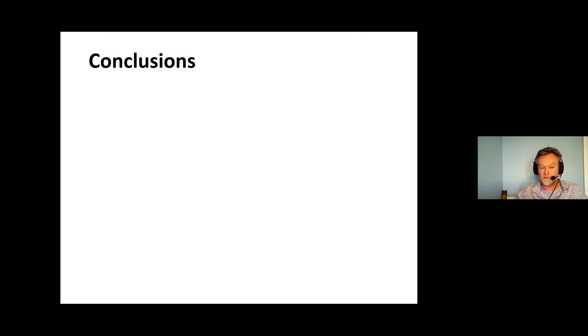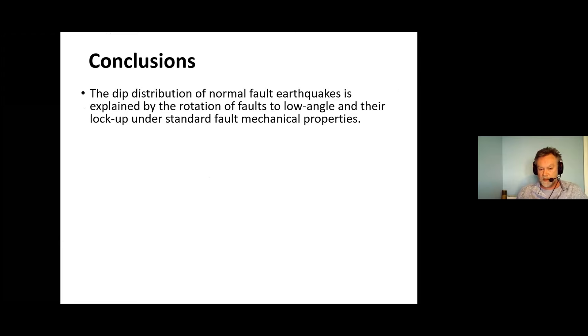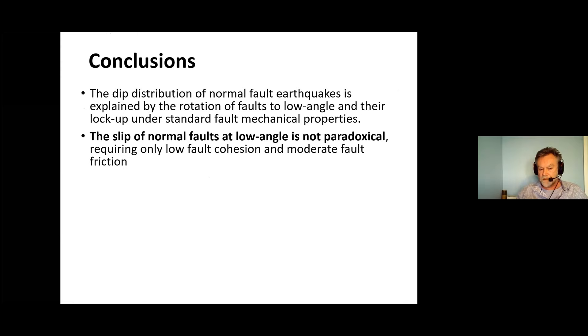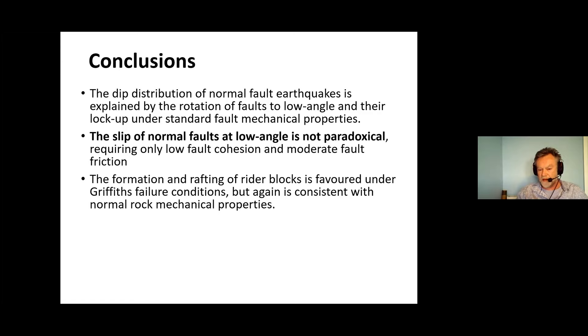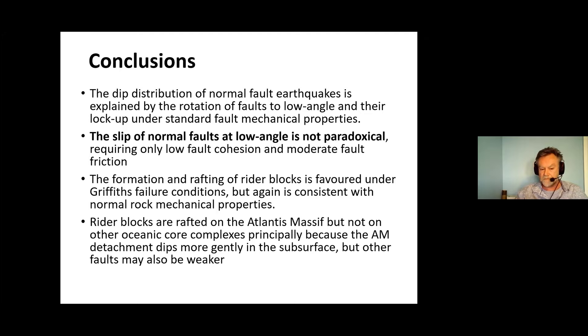So OCCs appear to have very standard fault properties. To conclude, the dip distribution of normal fault earthquakes is explained by the rotation of faults to low angle and their lock up under standard fault mechanical properties. The slip of normal faults at low angle is not paradoxical. It only requires low fault cohesion and moderate fault friction. The formation and rafting of rider blocks is favored under Griffiths failure conditions but again is consistent with normal rock mechanical properties. Rider blocks on the Atlantis Massif are rafted blocks. They occur on the Atlantis Massif but not on other oceanic core complexes because the Atlantis Massif detachment dips more gently in the subsurface. Although the other faults may also be weaker, there's no need for that. Thank you.